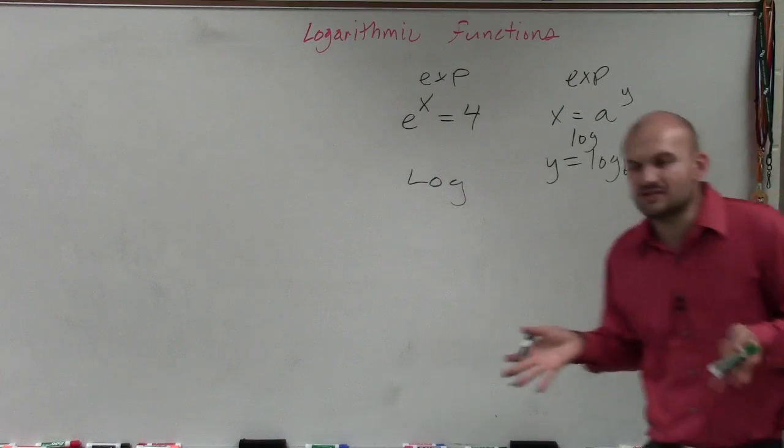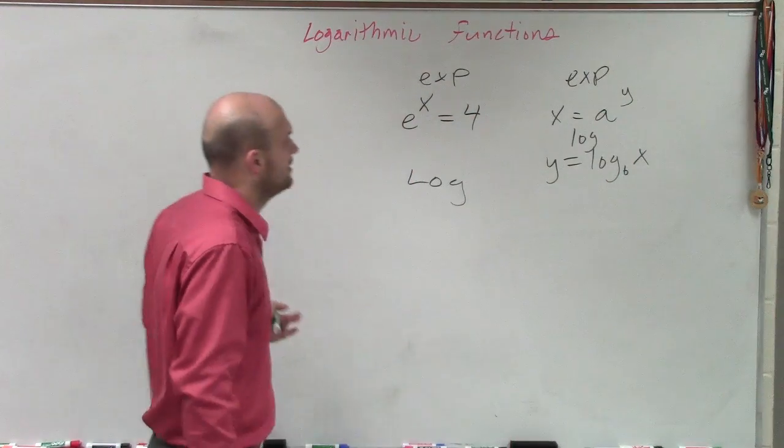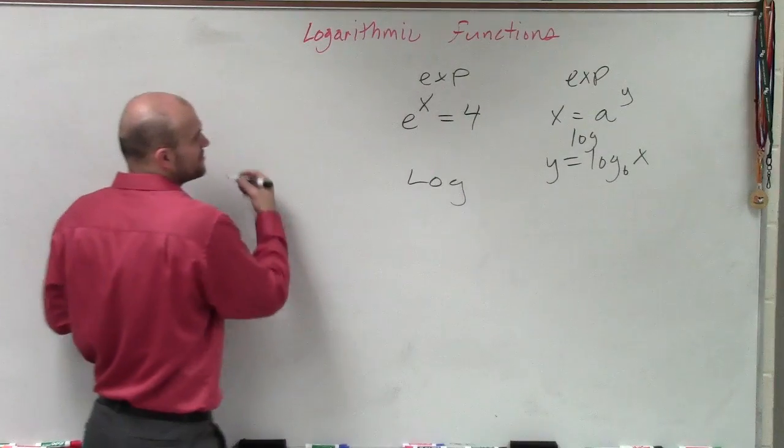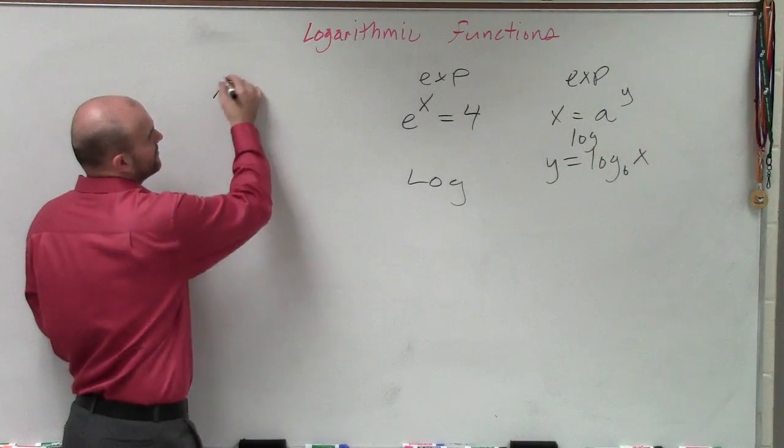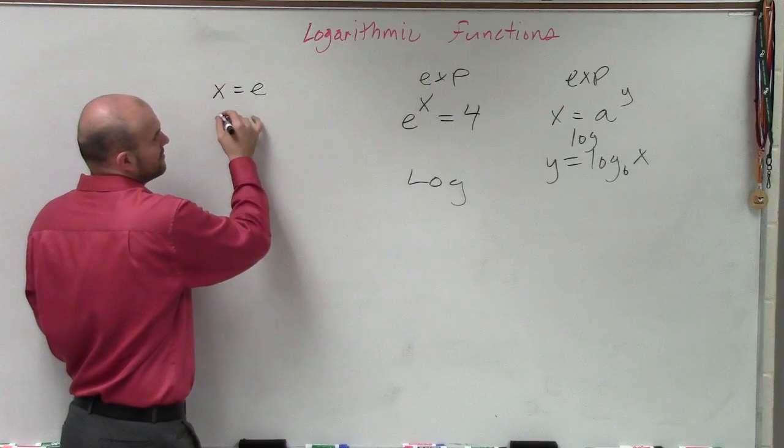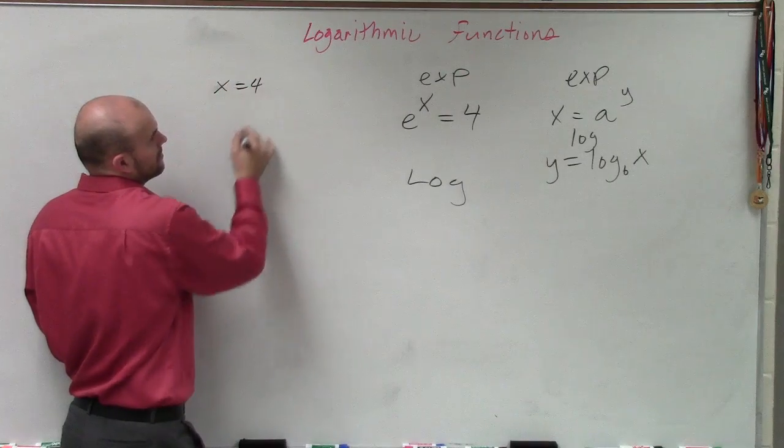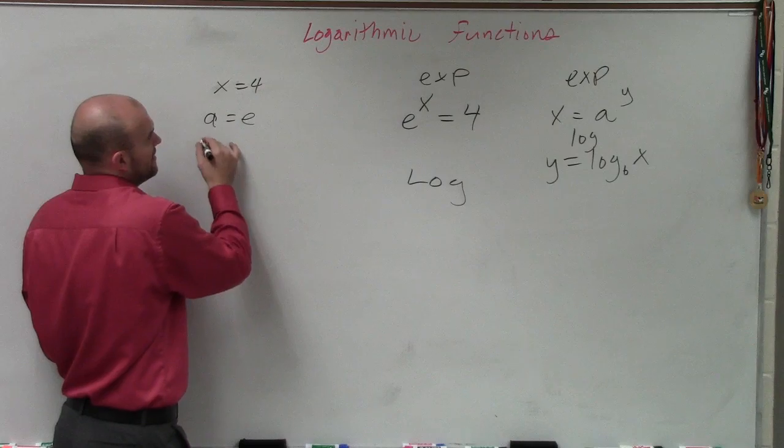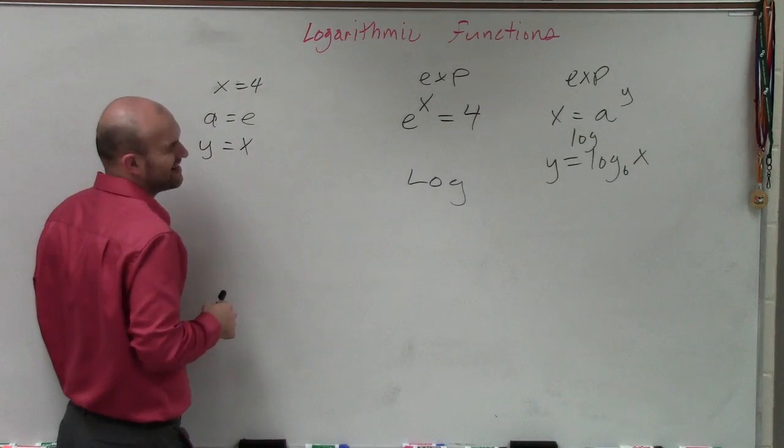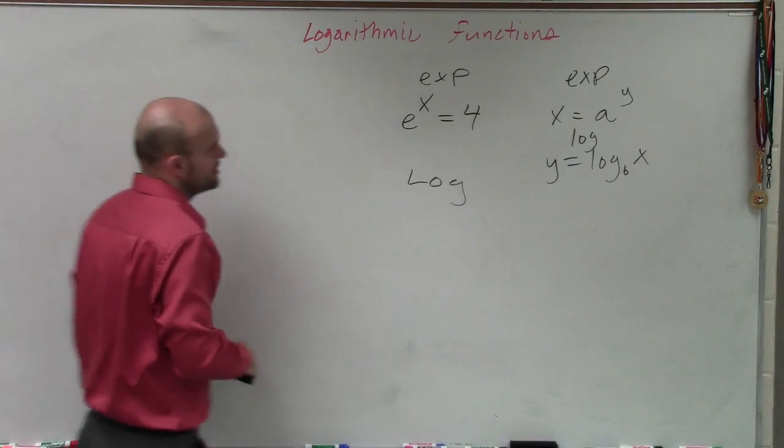So if you guys are just getting stuck with this, because sometimes you always forget it, a lot of times what I like to do is just write what each one equals. I don't really like how I have x twice, but just say x equals 4, a equals e, and then y equals x. It's kind of really confusing with the x's, isn't it? Let's do it another way.